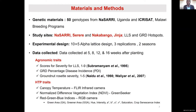50 genotypes from the NASARI and ICRISAT breeding programs were used in this study. These genotypes were planted at two locations — NASARI and Nakabango, which are LLS and GRD hotspots in Uganda. Data was collected across four time points: 5 weeks, 8 weeks, 12 weeks, and 16 weeks at harvest. Agronomic traits collected included LLS severity using the 1 to 9 scale, GRD percentage disease incidence, and GRD rosette severity on the 1 to 5 scale.